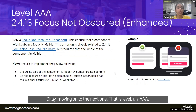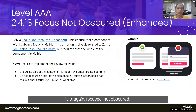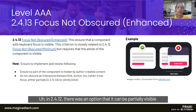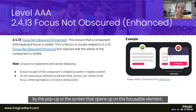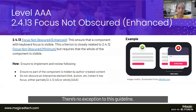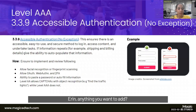The first Triple A guideline is 2.4.13 Focus Not Obscured — the enhanced version of 2.4.12. In the Double A version, partial visibility without limiting access was acceptable. At Triple A, the focused element must be completely visible to the user without being distracted or overlapped by a popup or screen opening on the focusable element. There is no exception to this guideline.